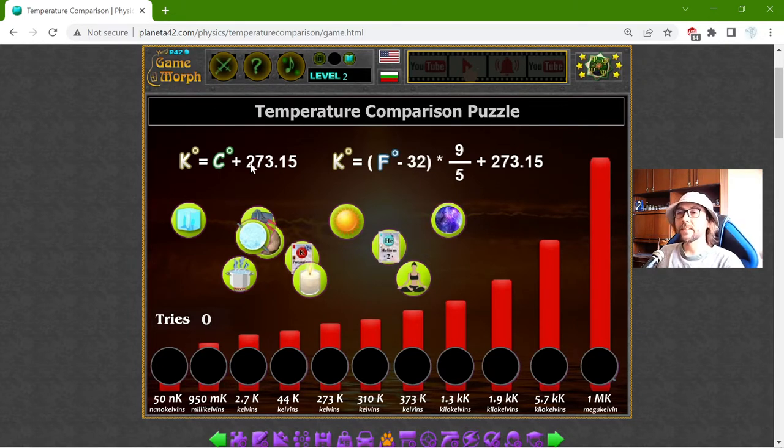Here I have the equations to calculate between different temperature units where the Kelvin equals the Celsius plus 273.15. That should be roughly 273. And with the Fahrenheit, it's a little more difficult, difficult here maybe.